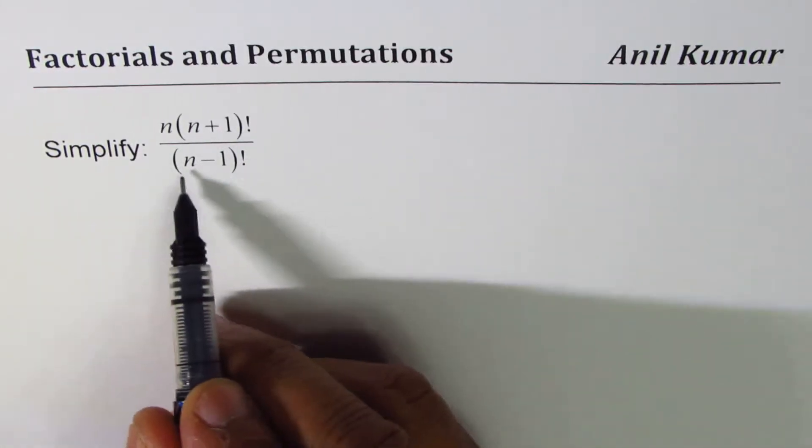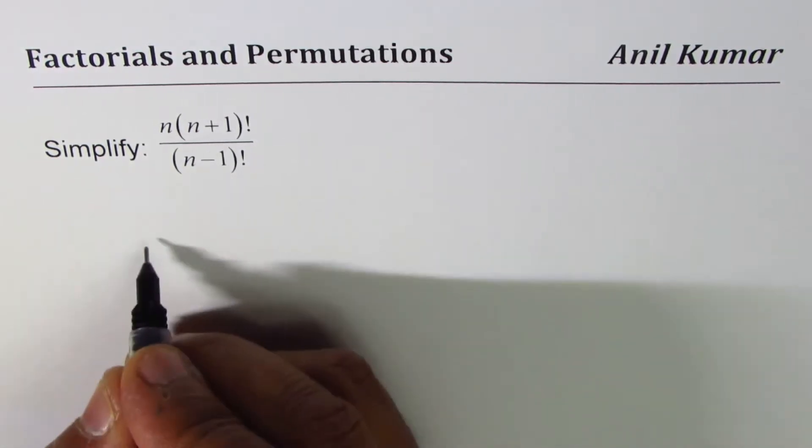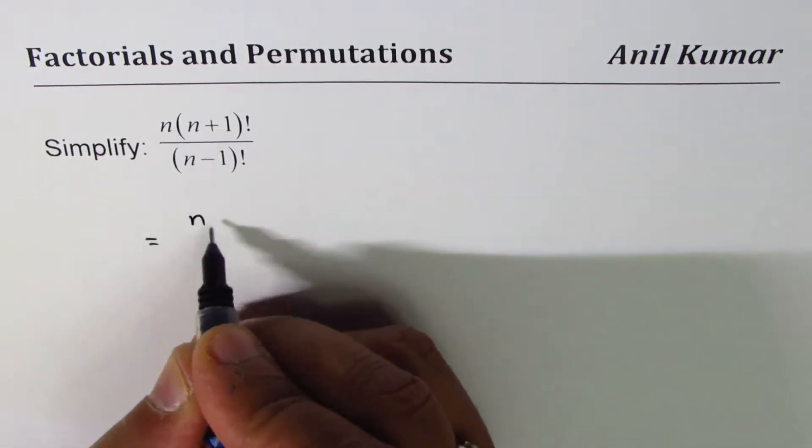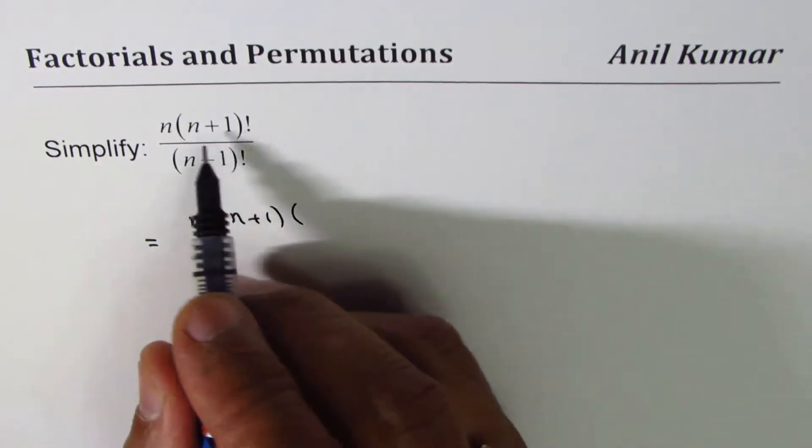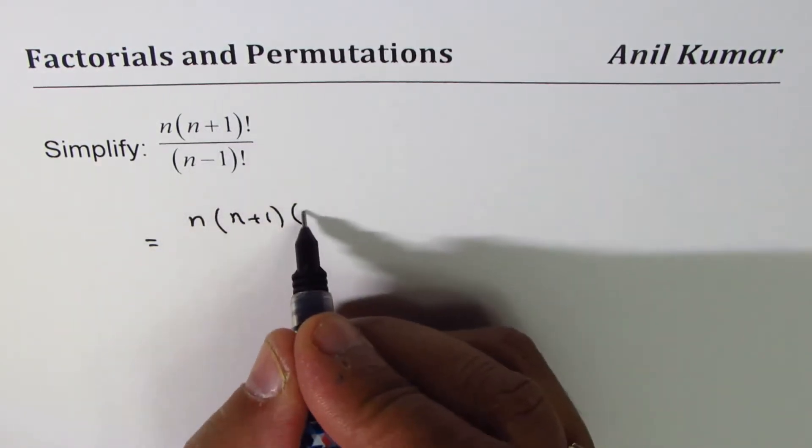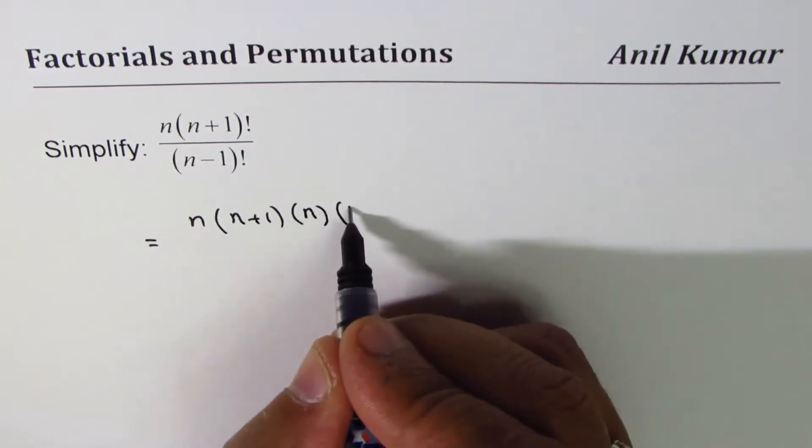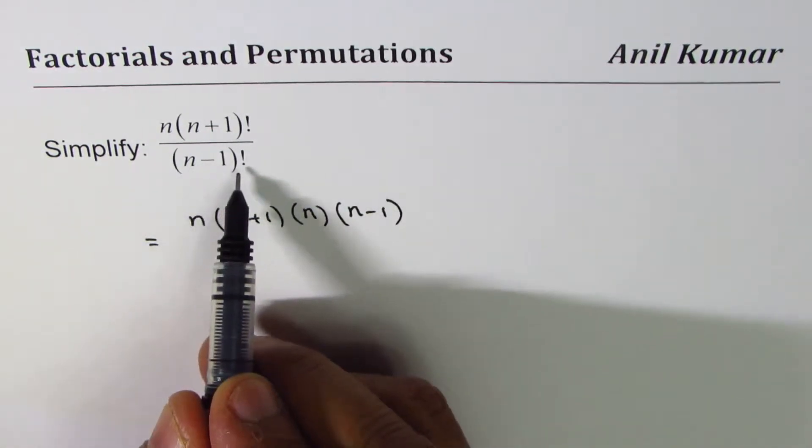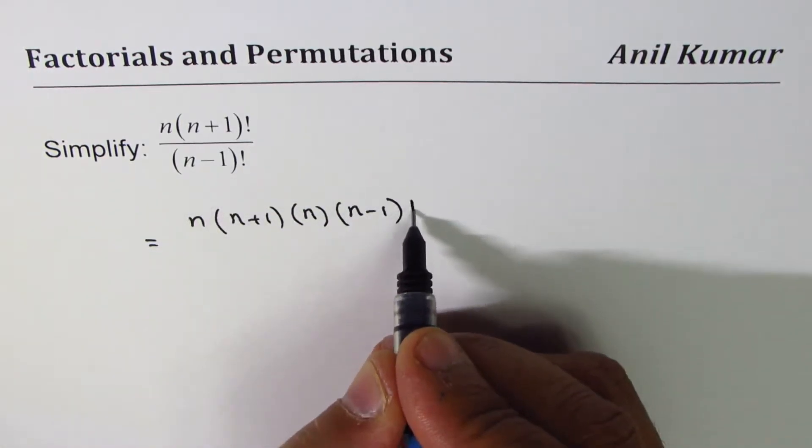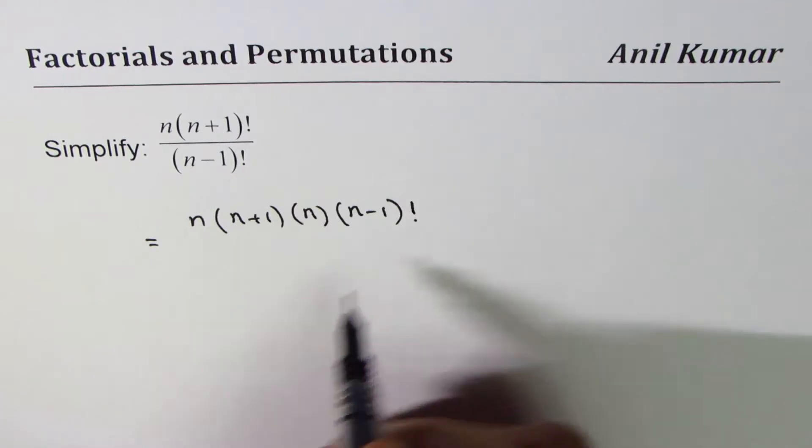Now we could write this as n times (n+1) times (n+1) minus 1, which is n, then (n-1). Now when you see (n-1)! is in the denominator, it's a good idea to stop there and write this as (n-1)! rather than writing all the terms.